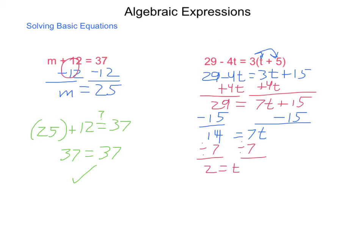Wanting to make sure that this is correct, I will substitute it back into the original equation. 29 minus 4 times 2 is supposed to be equal to 3 times 2 plus 5. Well, 29 minus 4, 4 times 2 is 29 minus 8. And that is supposed to be equal to 3 times 7. Simplifying my left-hand side, I get 21. Right-hand side, I get 21. So, my answer works out. And we have checked it off.